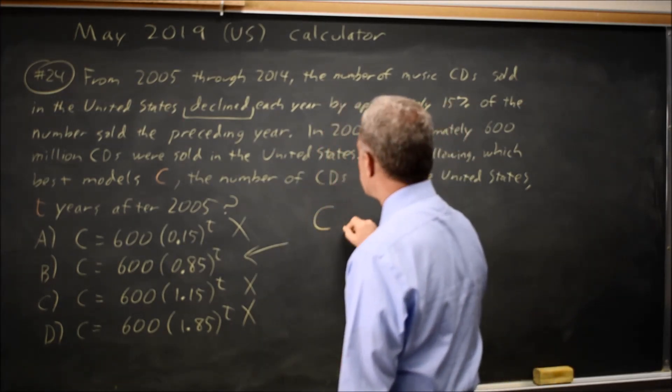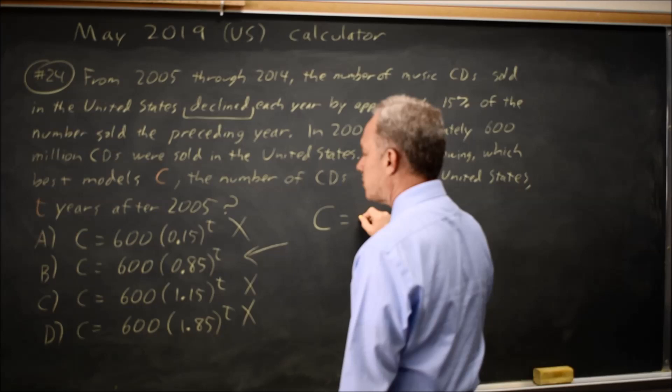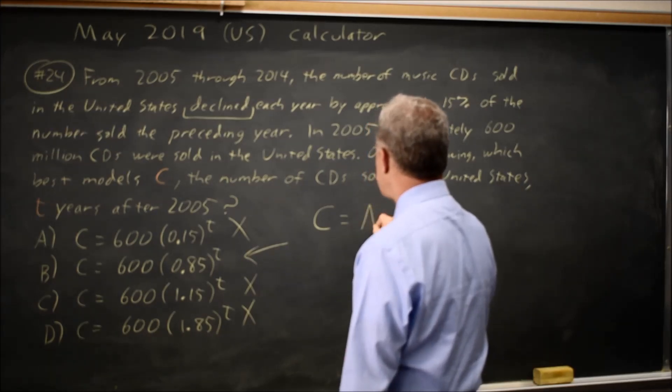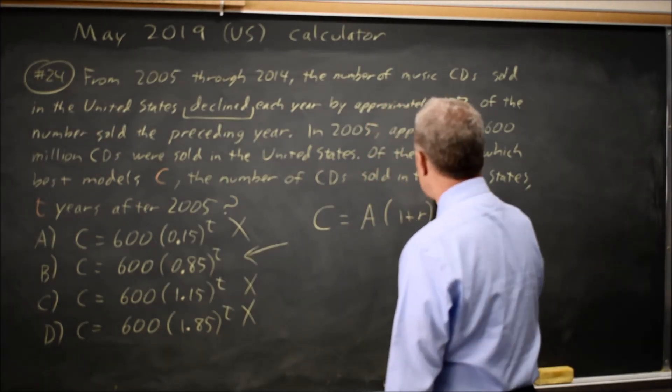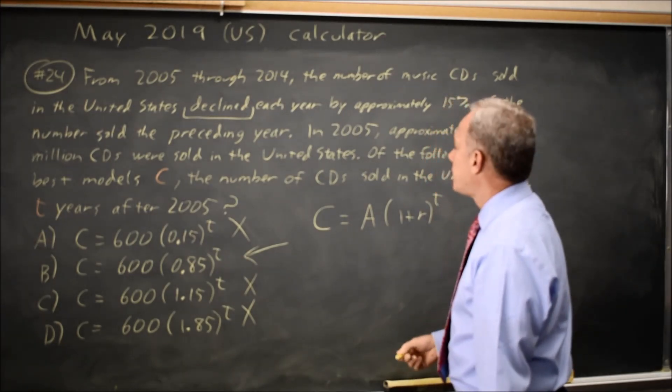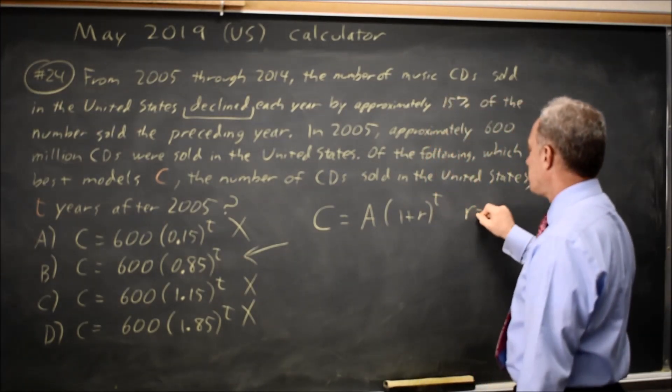The equation we're using here is C, the number of CDs, equals our starting amount, which I'll just call A, times one plus R to the T.